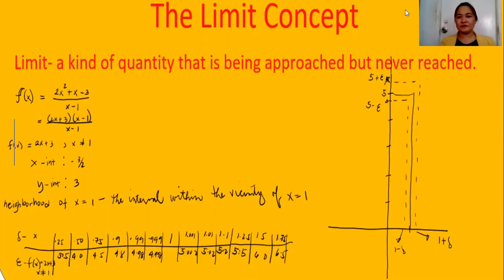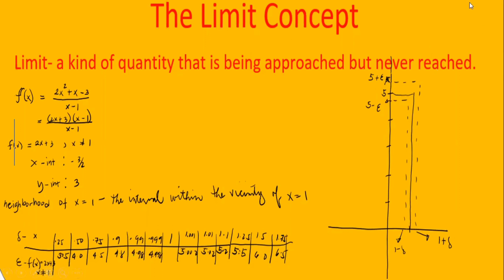So we have here the definition of limits and what we mean by the limit of a given function. The limit concept: a limit is a kind of quantity that is being approached but never reached. It can be nearest to the given point but not exactly the actual point. Here is the illustration — this is the graph of the given function.